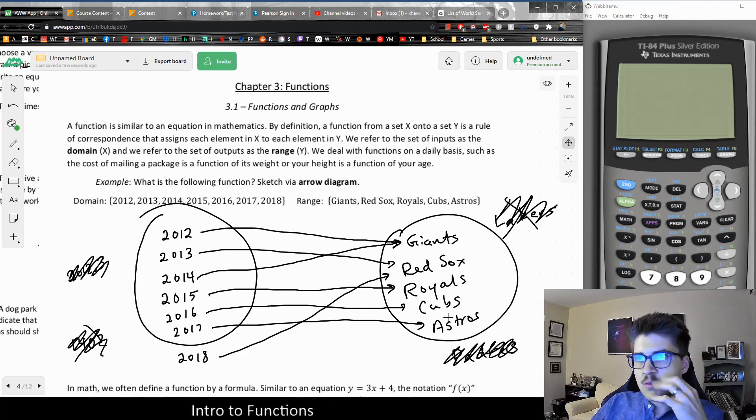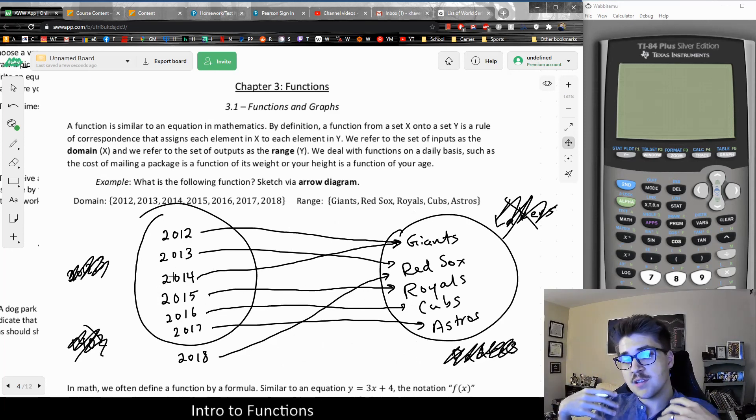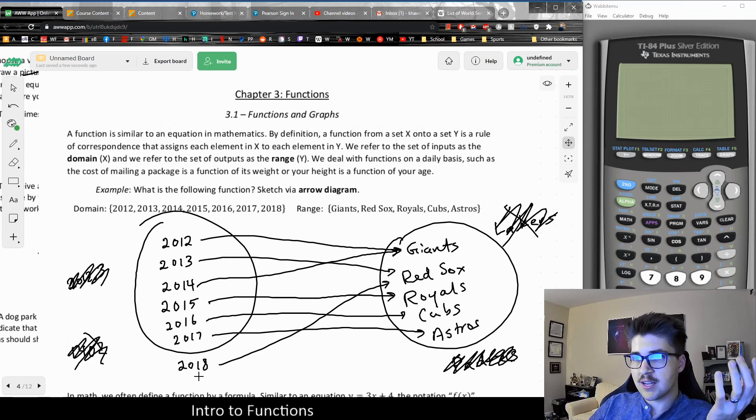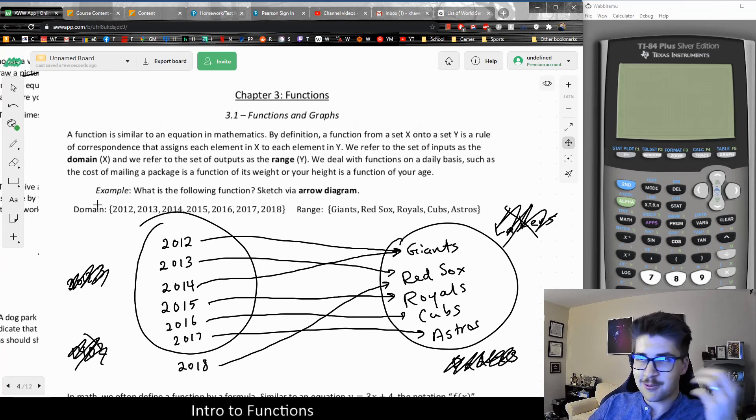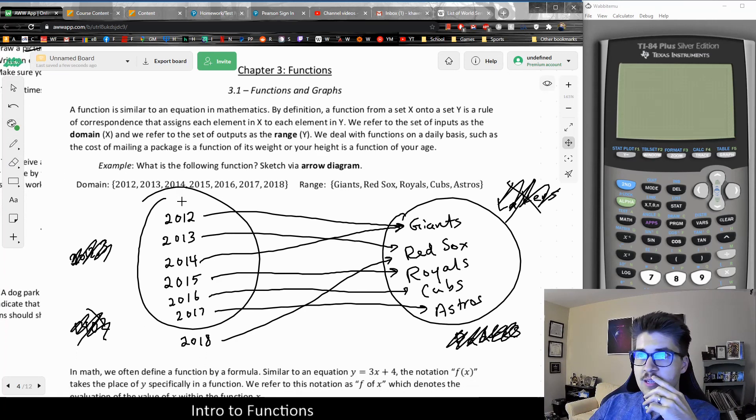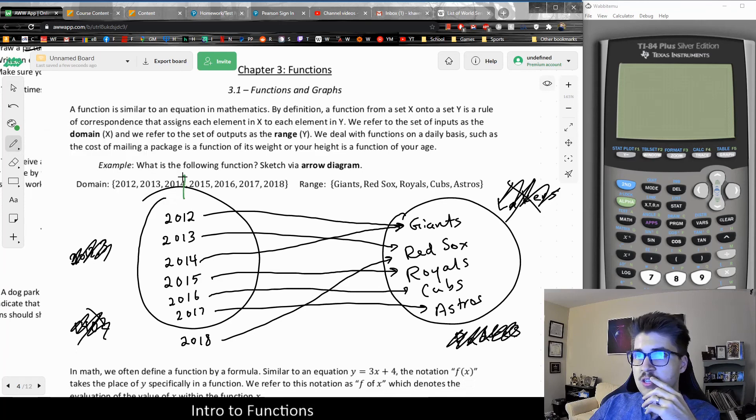Also, when we're looking at this, this isn't necessarily the whole function. This is just a little snippet of the function to help us understand this relationship. A lot of times there's other numbers. There could be 2019, 2020, or values going into the past, which if we extend or open up that domain, it would also open up the range and add more teams into it. But, again, never going to be the Padres.